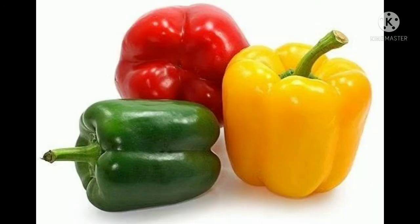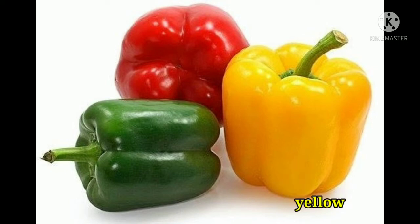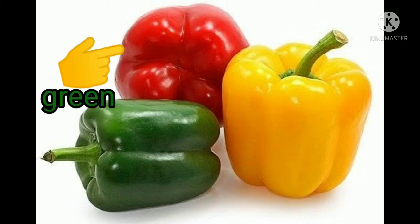Now, children, look at the next picture. What are these? Can you identify? These are capsicums, right? So, children, how many capsicums can you see? One, two, and three, right? Can you tell me these capsicums are in which color? This capsicum is yellow, this one is green color, and this one is red.